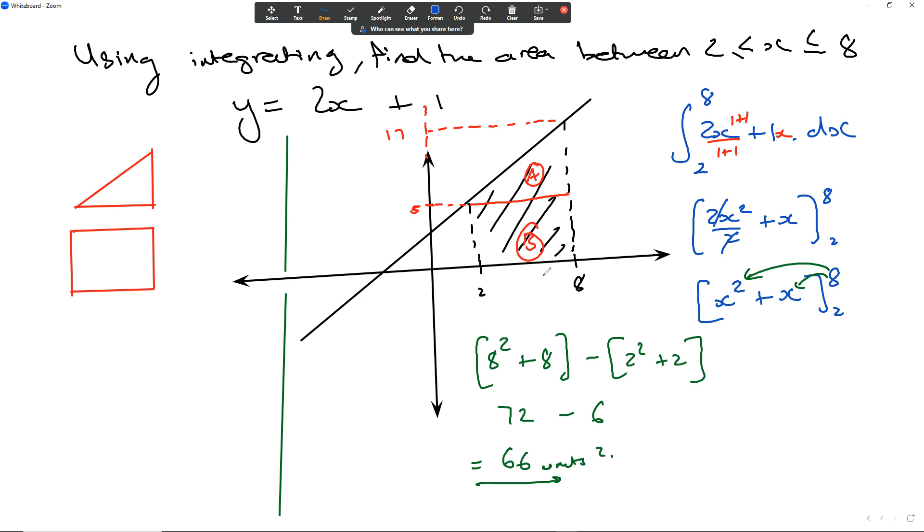So 8 minus 2 is 6 in length, and this is going up to 5, so that's 30 units squared, 6 times 5. This length over here is 6, and that goes from 5 to 17, which is 12. 12 times 6 divided by 2 is going to be 3 times 12, which is 36 units squared. And so we can see that if we add it up, our actual area is going to be 66 units squared, which is perfect.